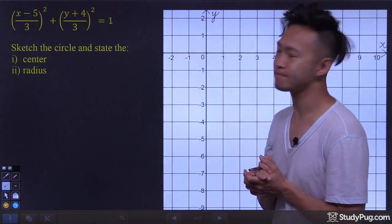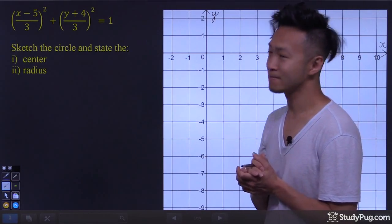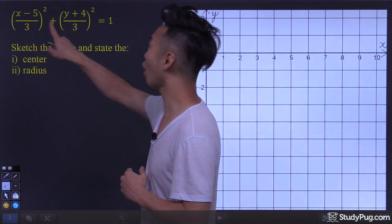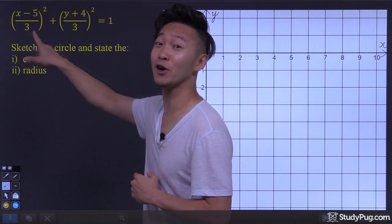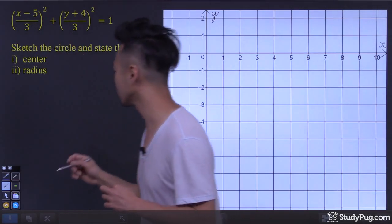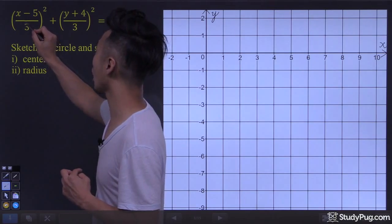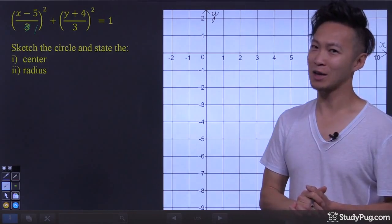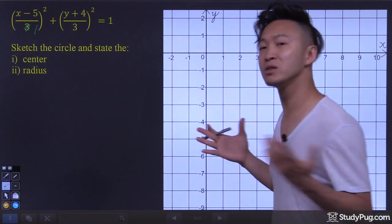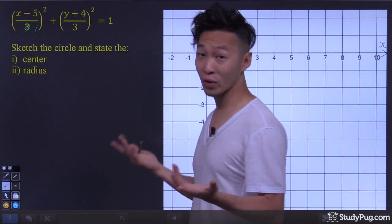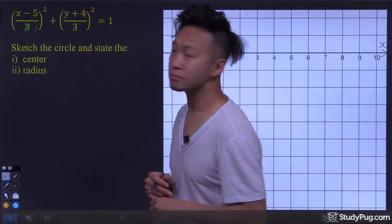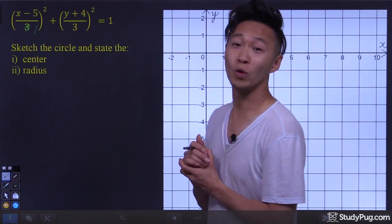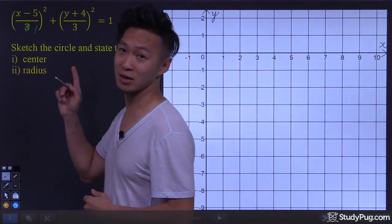How do I do that? I can simply change the values of the denominators so they have different values. I'm going to change the first denominator to 1, and just like that, we now have an ellipse. So let's graph this ellipse. As usual, the first thing we're going to do is locate the center. We make the numerator equal to 0.